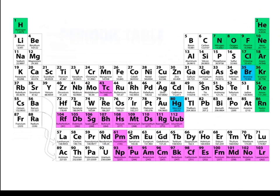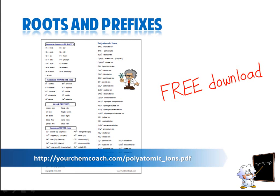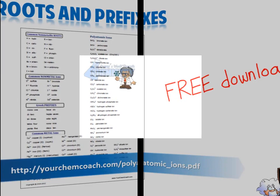Get out your periodic table. Get out your polyatomic ions and prefixes sheet. If you don't have that free download, go to the URL at the bottom of this page and get your free download and have this wonderful tool for your use. Alright, let's get started.